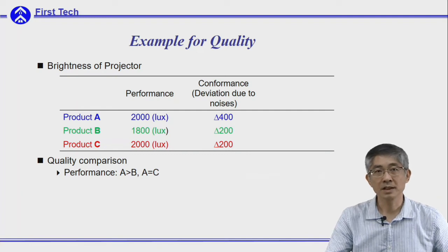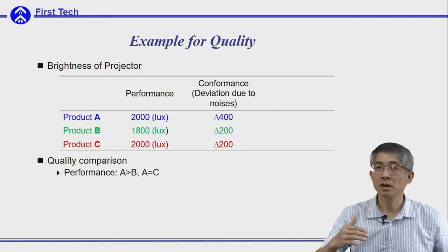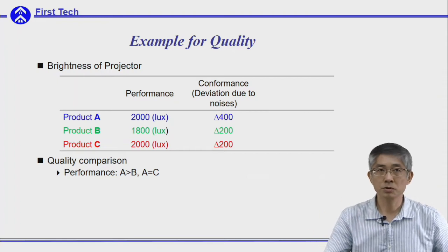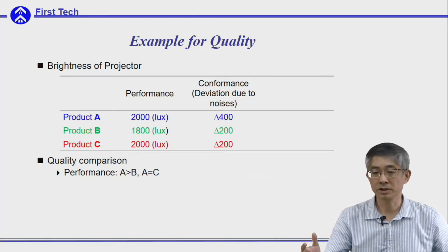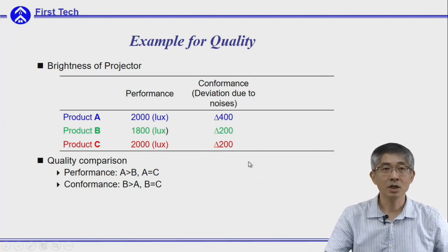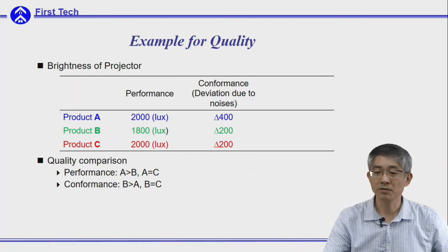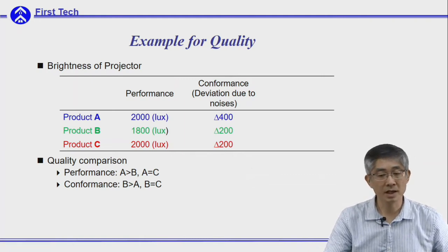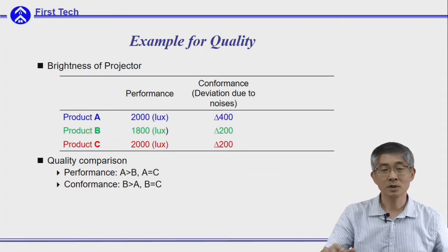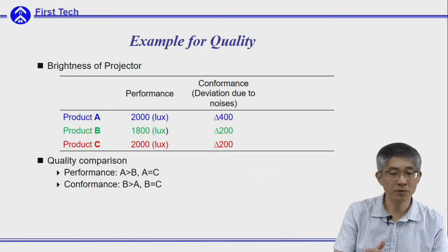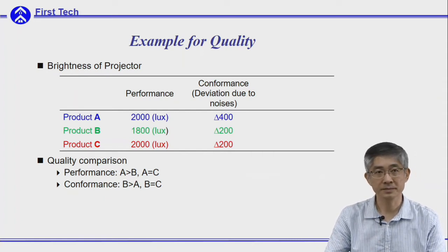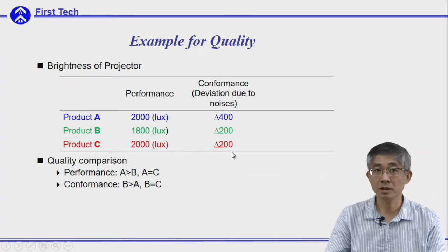As I mentioned, the performance of a product will vary due to either life cycle or manufacturing errors, so there is a tolerance associated with performance. Therefore, when you consider conformance, you will see product B and C are better than product A. When you want to pick good projectors, if you consider both performance and conformance, it seems product C is the best choice, because it has better performance and better conformance.